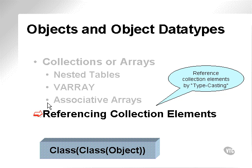How do we reference collection elements? How do we reference nested tables, V arrays, and associative arrays? Generally, they are referenced using what is called in the object world, typecasting. This is what a typecast looks like.